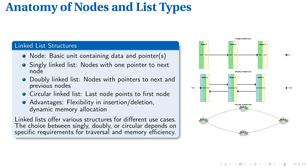Now let's examine the node structure and types of linked lists. Nodes are the building blocks containing data and pointers. Singly-linked lists use one pointer per node, directing to the next element. This structure is memory efficient but limits backward traversal.